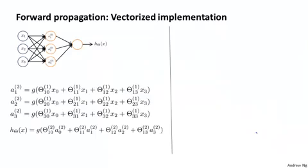Consider this neural network. Previously, we said that the sequence of steps we need in order to compute the output of a hypothesis is these equations given on the left, where we compute the activation values of the three hidden units, and then we use those to compute the final output of the hypothesis h of x. Now, I'm going to define a few extra terms. So this term that I'm underlining here, I'm going to define that to be z superscript 2 subscript 1. So that we have that a21, which is this term, is equal to g of z21.